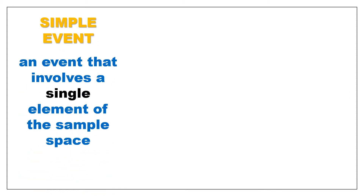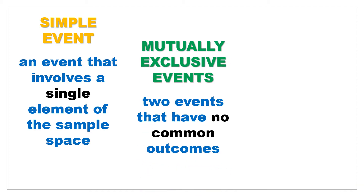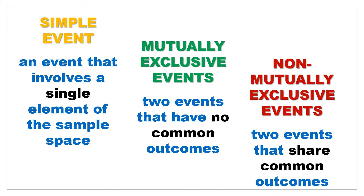First, we have a simple event — an event that involves a single element of the sample space. Next is mutually exclusive events: two events that have no common outcomes. And last but not the least, non-mutually exclusive events: two events that share common outcomes.